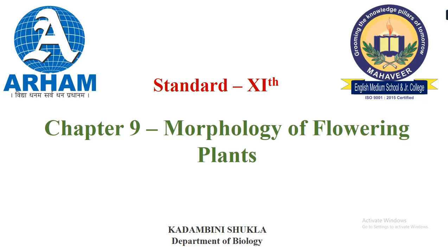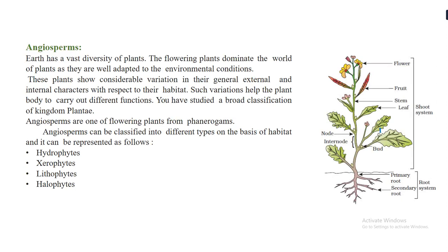Hello students. Today we are starting with the ninth chapter of the syllabus — Morphology of Flowering Plants. In this chapter, we are going to study the morphology of angiosperms. We know that earth has a wide diversity of plants: some are non-flowering and some are flowering ones. Angiosperms are the flowering ones, and they dominate the world of plants because they are well adapted to environmental conditions.